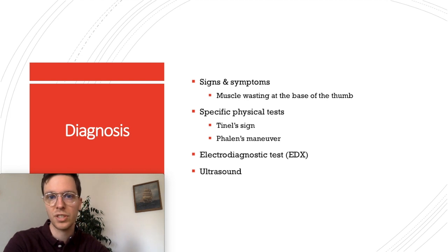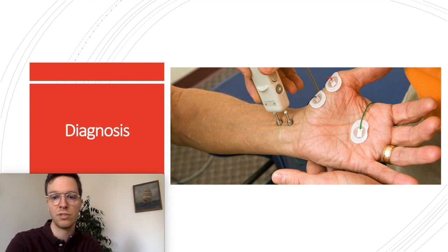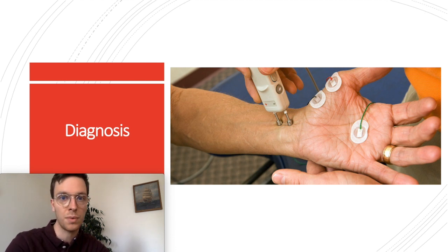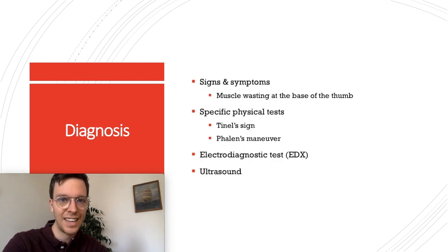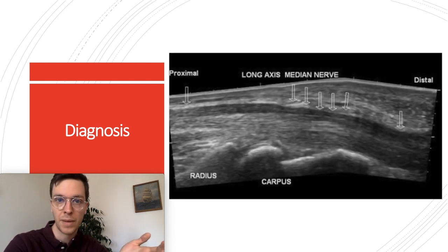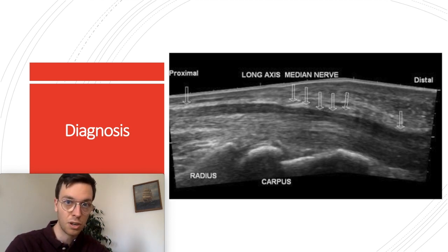The next step in the diagnostic process would be electrodiagnostic tests. This is usually done by a neurologist, who performs electrodiagnostic tests across the median nerve to check for any innervation problems. If the neurologist finds any delay in the innervation of your median nerve, this has high sensitivity for diagnosing CTS. Lastly, an ultrasound of your carpal tunnel might also be done to check for any irritation of your median nerve or any intrinsic causes such as lipomas.